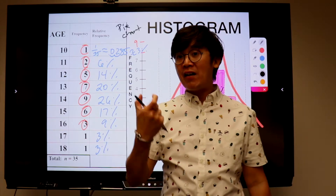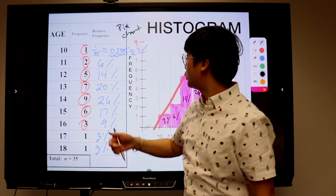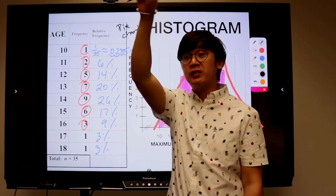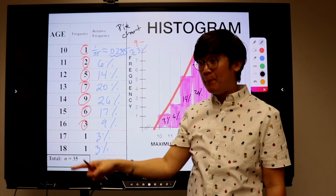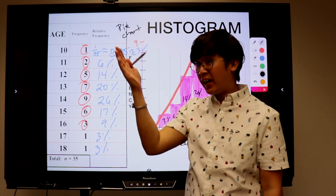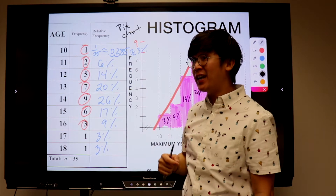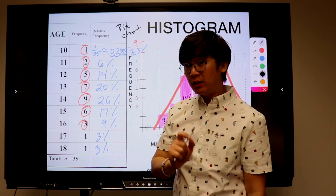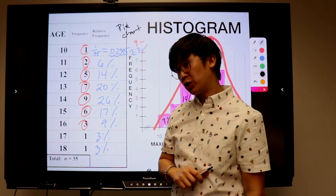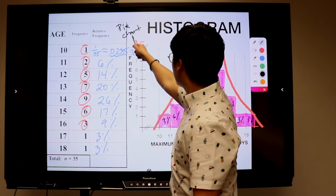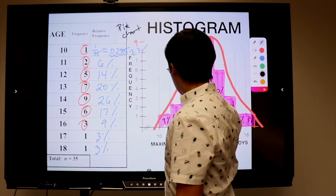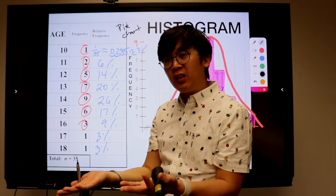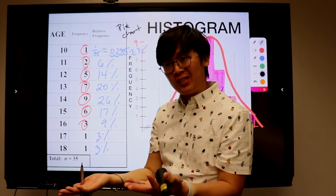Another graphical representation you could use for relative frequency is a pie chart, because it represents a whole. If you draw a big circle and cut it depending on each percentage, you'll be able to create a pie chart. A pie chart and a histogram are related — a pie chart is just a circular form of your histogram.